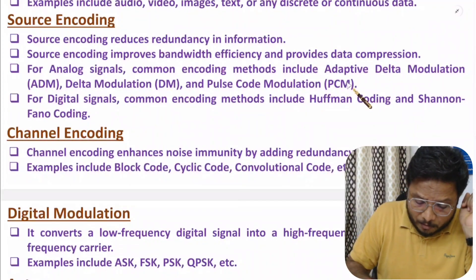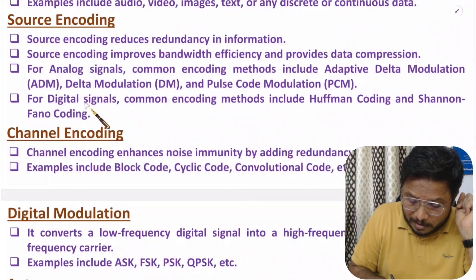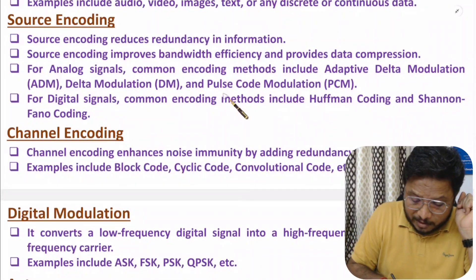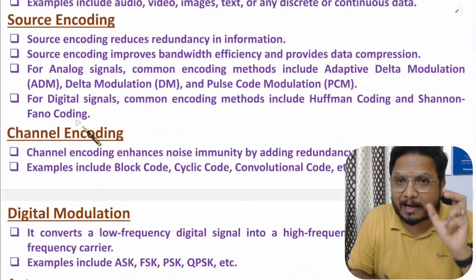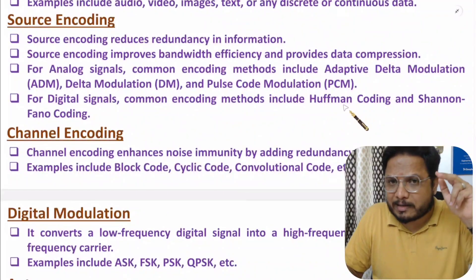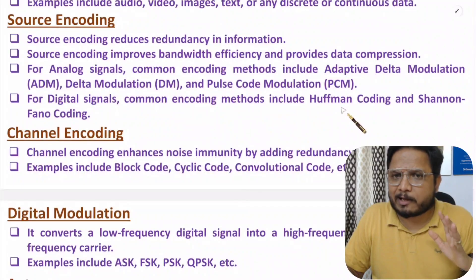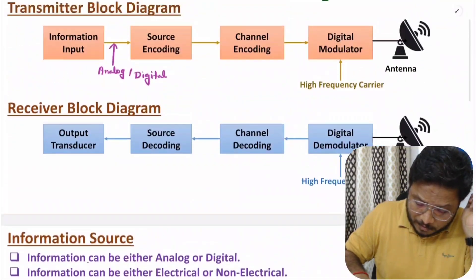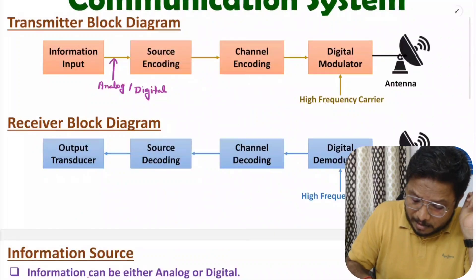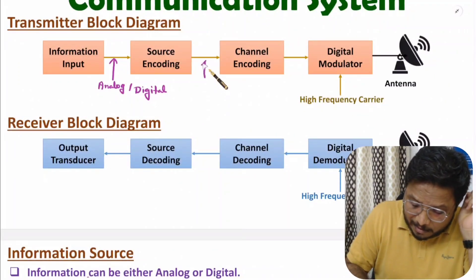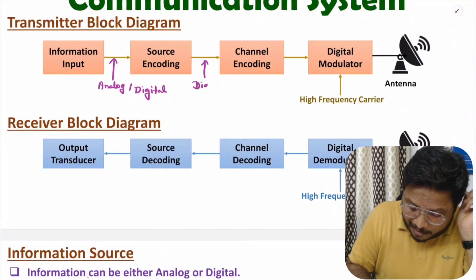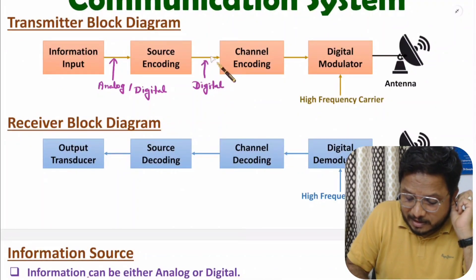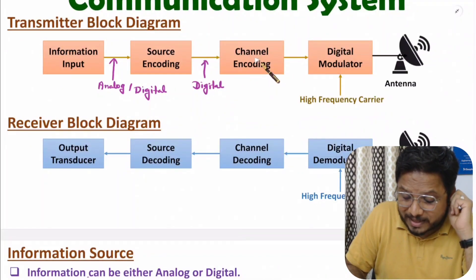If we have a digital signal as input, then one can use Huffman coding or Shannon-Fano coding for data compression. These methods will also be covered in this video lecture series with great clarity along with examples. After source encoding, we will have digital data, which is then given to channel encoding.